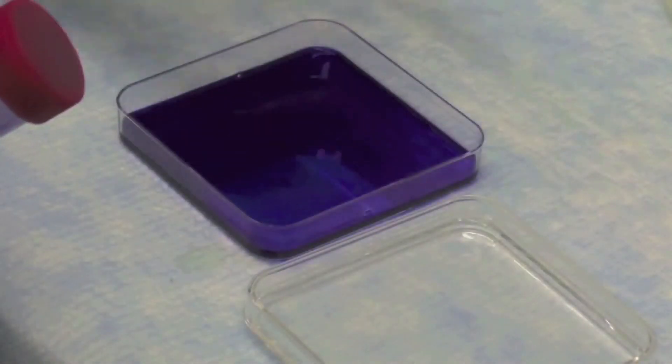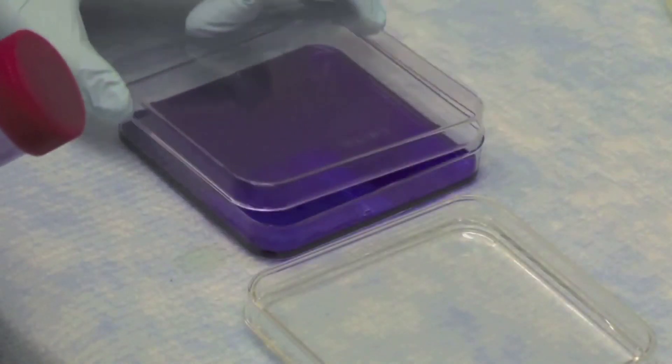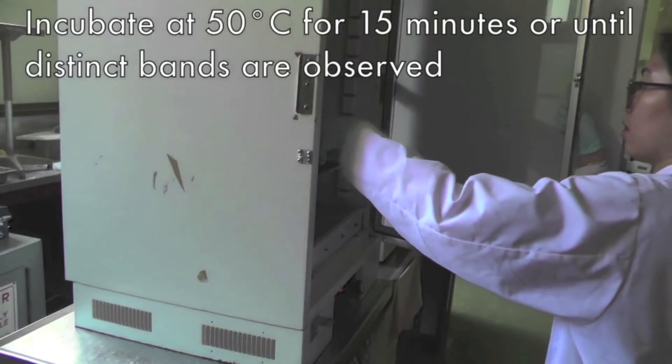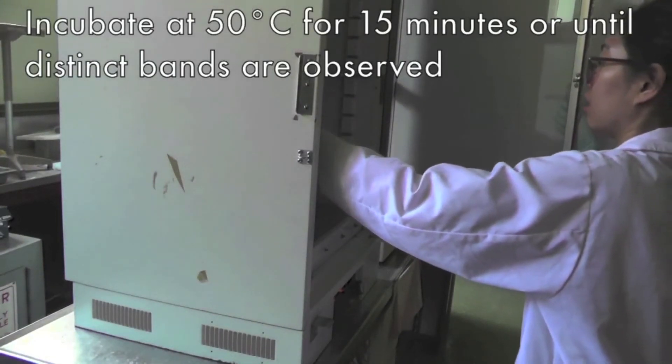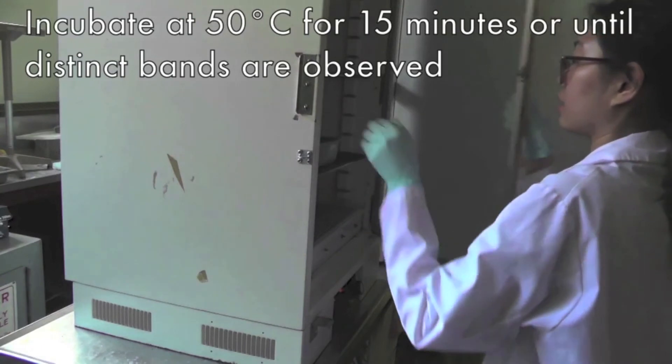Discard the washing solution, add Coomassie blue staining solution, place in a metal tray, and incubate at 50 degrees celsius for 15 minutes. Continue to stain until you can observe distinct bands on the gels.